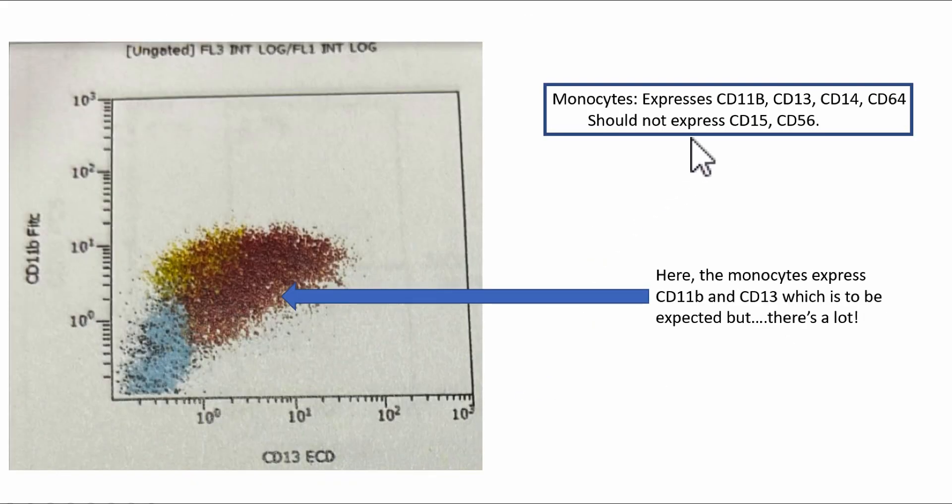Remember monocytes express CD11B and 13. So CD11B, the monocytes as shown by the brown data points are positive and CD13 is also positive. This is normal for monocytes, but there's a lot.